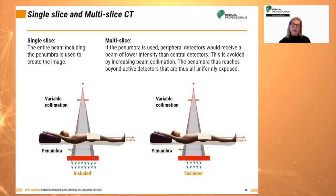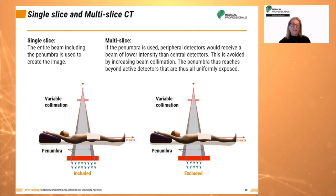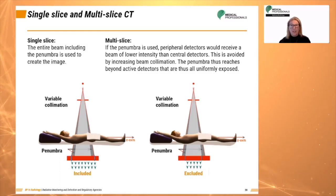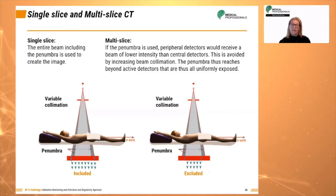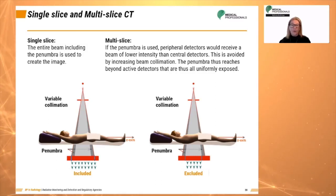Let's talk about single-slice and multi-slice acquisitions and their differences. In a single-slice CT, the entire beam including the penumbra is used to create the image. However, in multiple-slice CT, if the penumbra is used, the peripheral detectors would receive a beam of lower intensity than the central detectors. This is avoided by increasing the beam's collimation, allowing the penumbra to reach beyond the active detectors so that all are uniformly exposed.